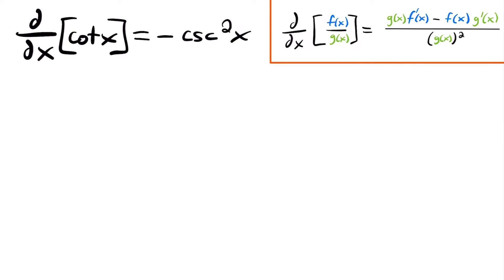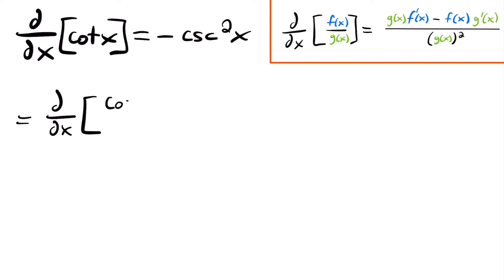Next, let's look at cotangent x and use the quotient rule to prove that the derivative of cotangent x is equal to negative cosecant squared x. You might be thinking there's no quotient here, but you can actually redefine cotangent x — we can have the derivative with respect to x of cosine x divided by sine x. That's one of our trig identities: cotangent x equals cosine divided by sine. So now we have a quotient of two functions and we can use our quotient rule.